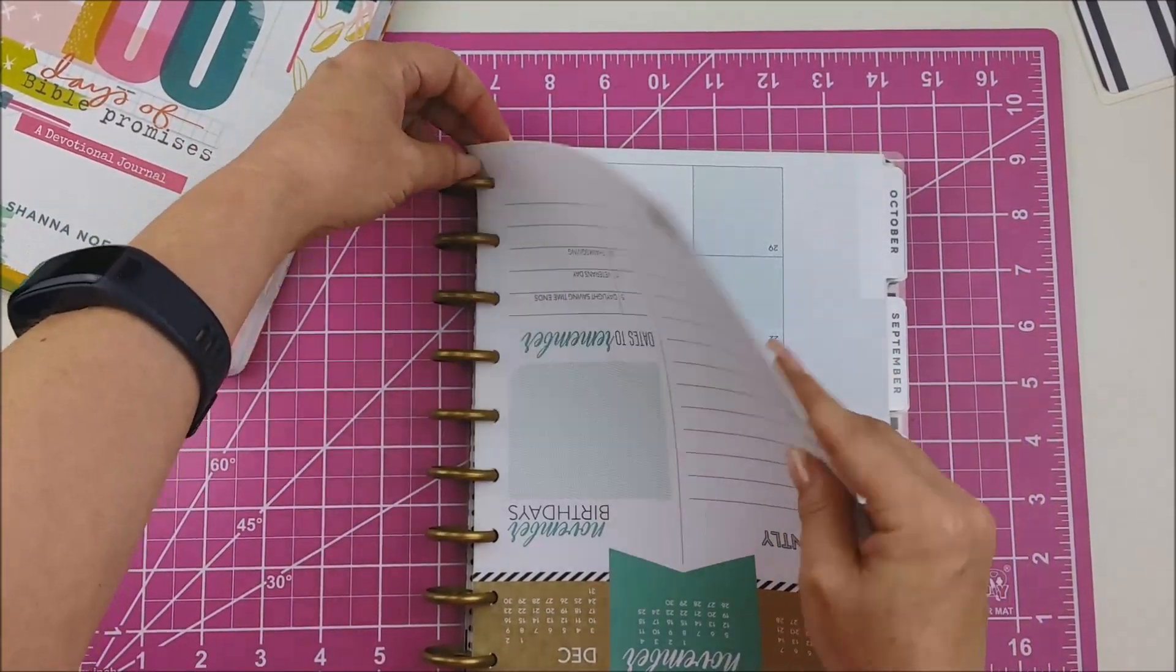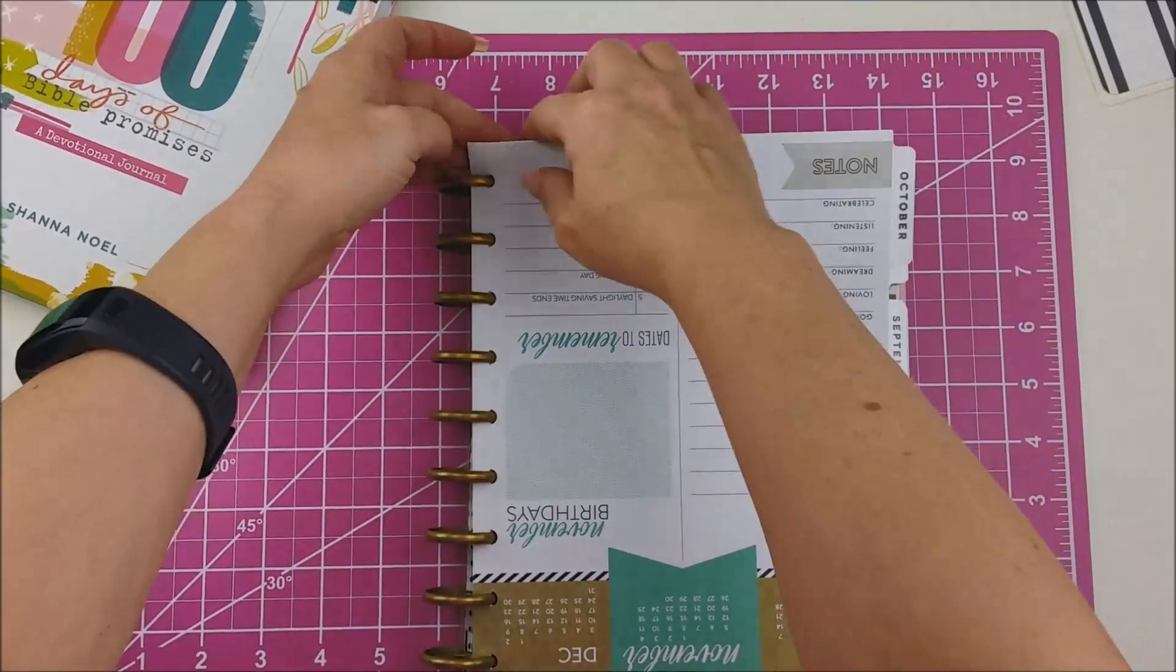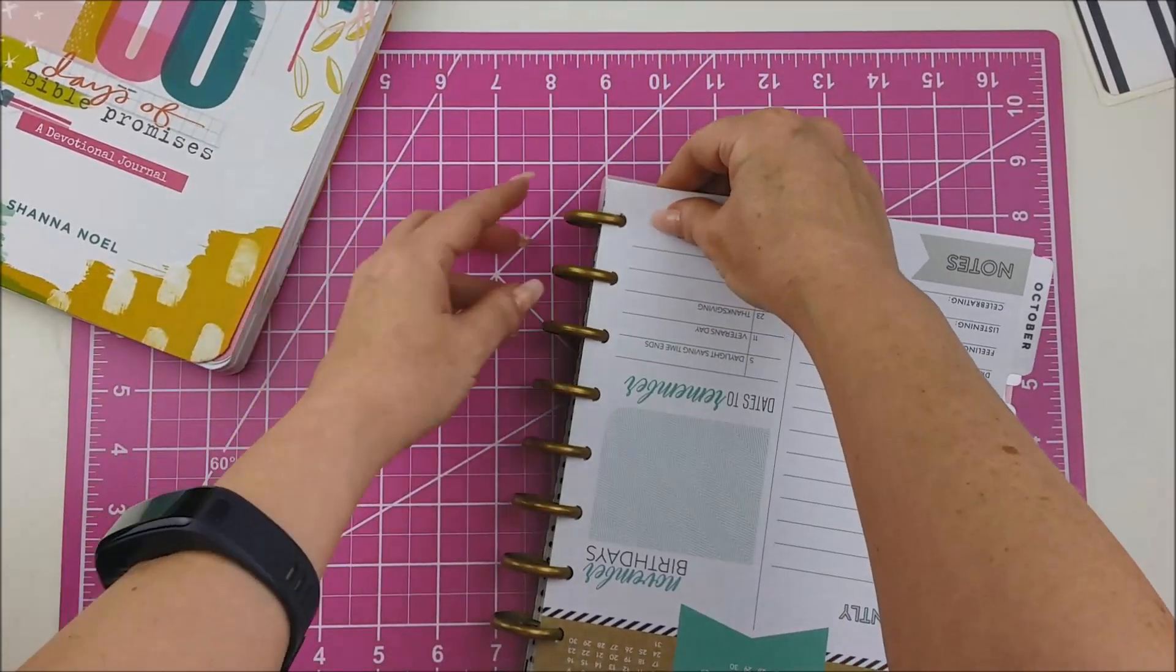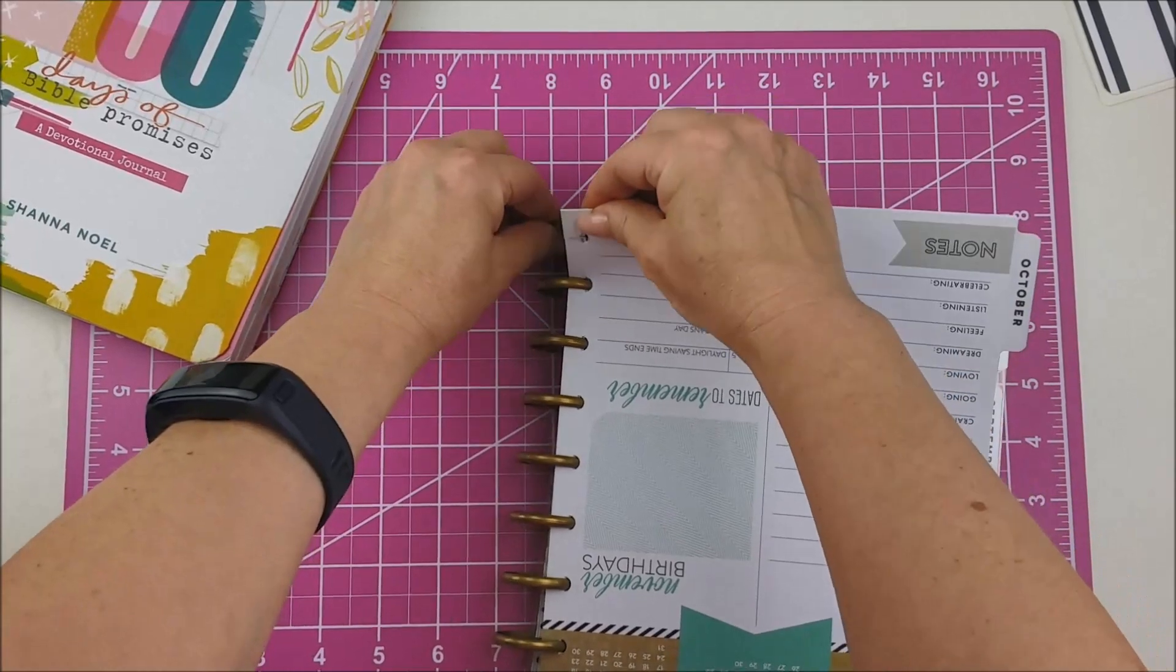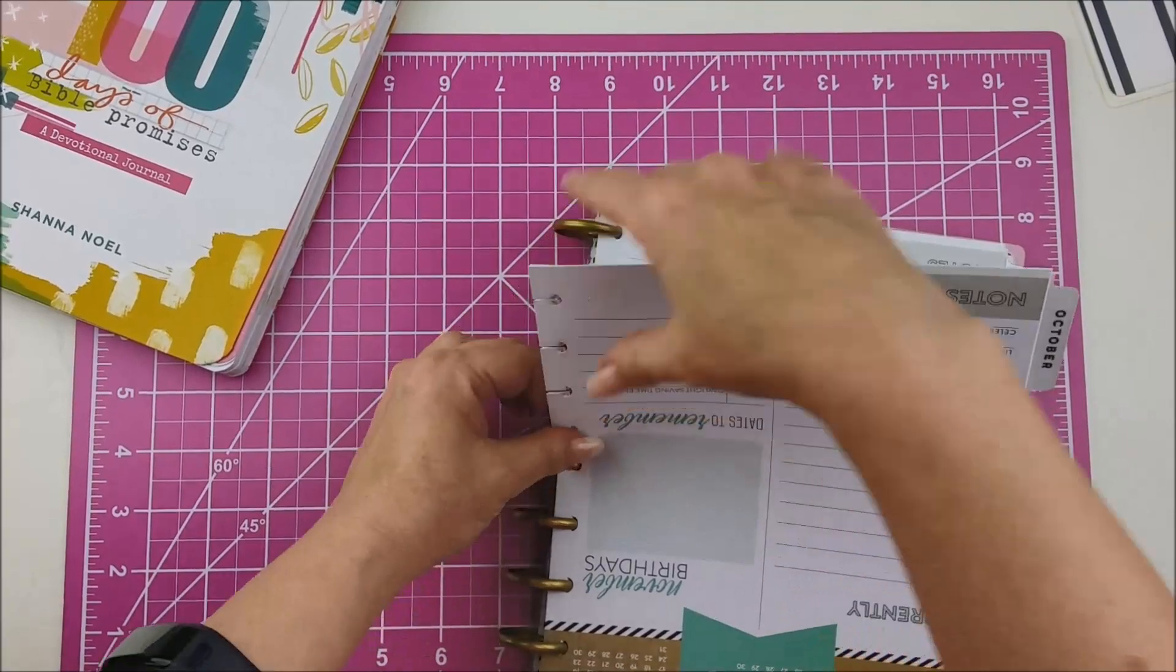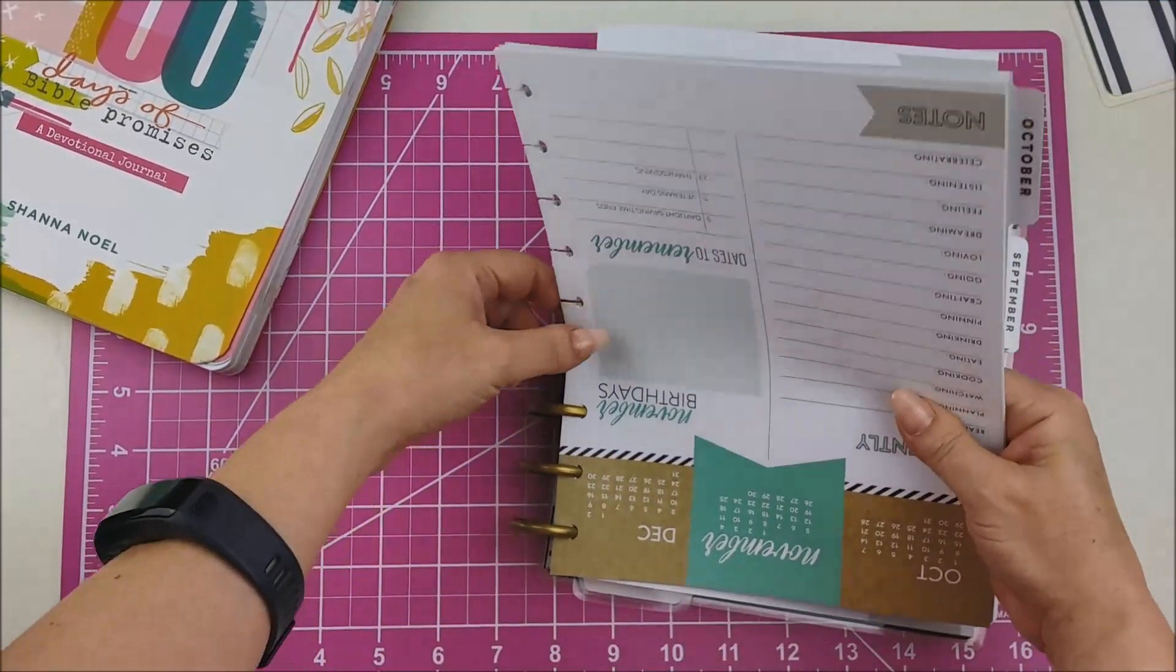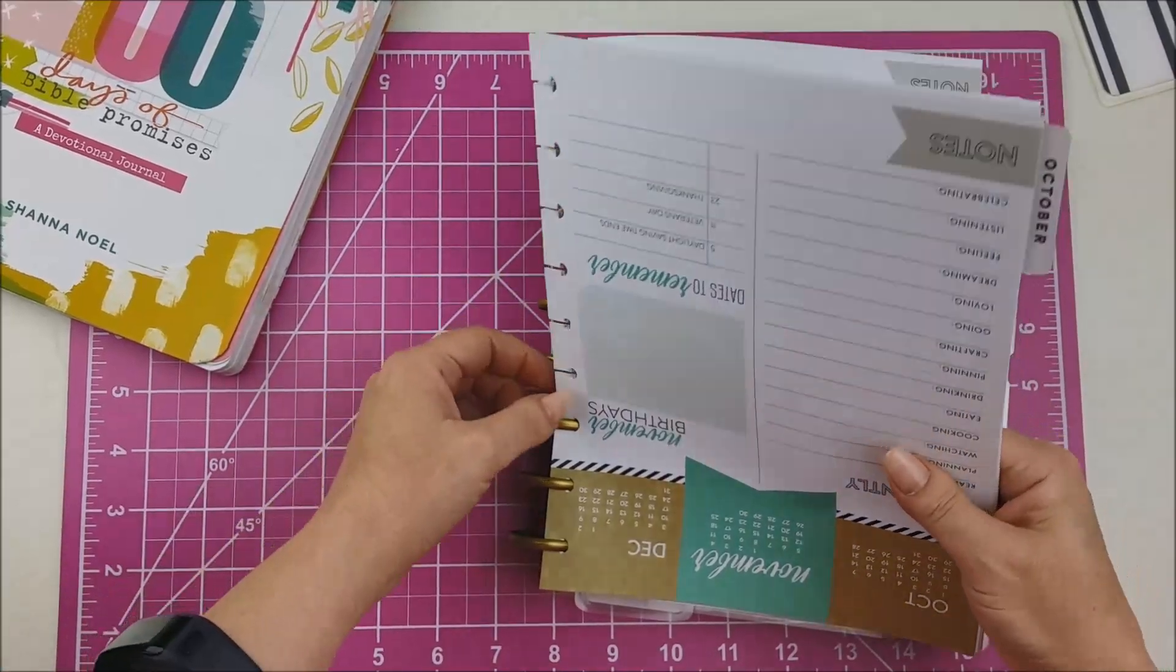Just let it naturally kind of pop off and just pull straight up. Okay, same with the pages. I just grab, you know, a month's worth and just pull starting at the top and just lift upwards.